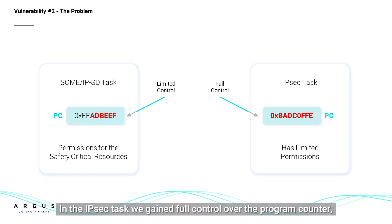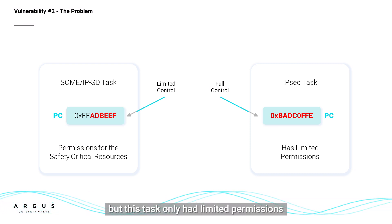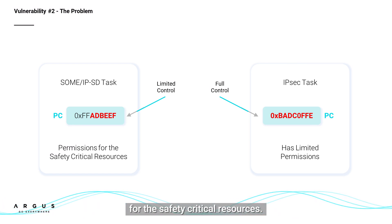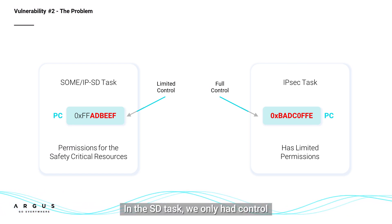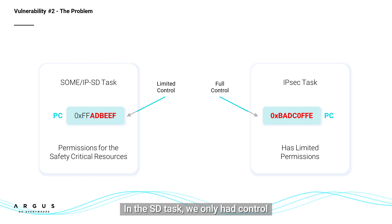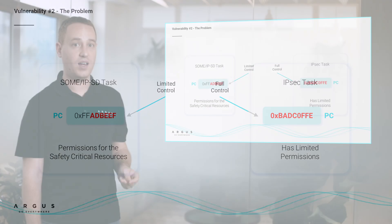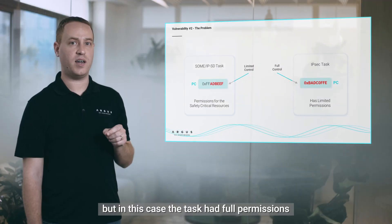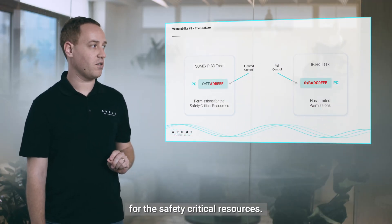In the IPsec task, we gained full control over the program counter, but this task only had limited permissions for the safety critical resources. In the SD task, we only had control over the three least significant bytes of the program counter, but in this case the task had full permissions for the safety critical resources.